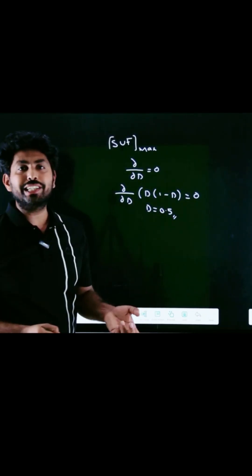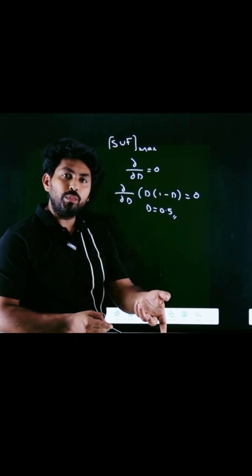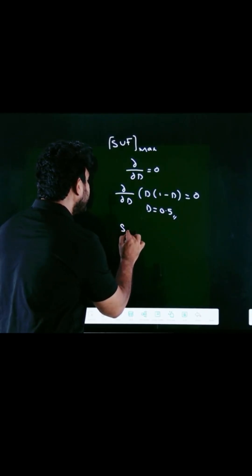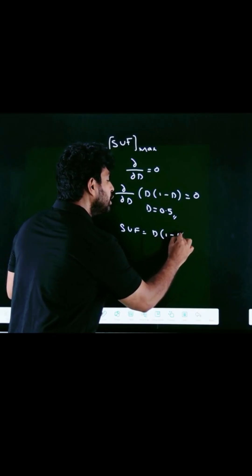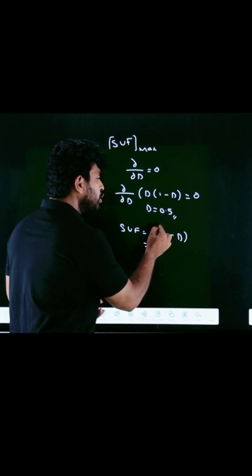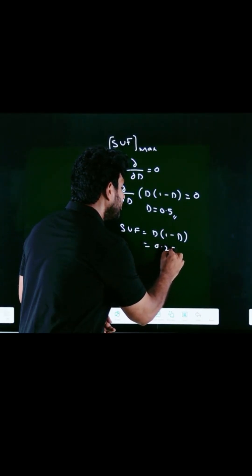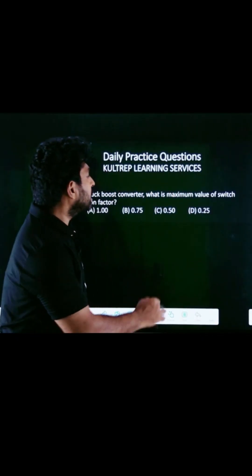At D equals 0.5, the switch utilization factor reaches its maximum value. The maximum switch utilization factor equals 0.5 times 0.5, which equals 0.25. So we can now answer the question.